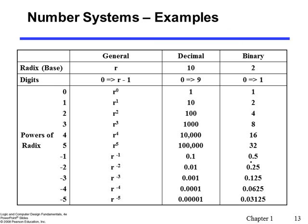In the decimal number system the radix is ten, so we have ten different digits: zero through nine. In the binary number system we have two digits: zero and one — those are the two digits in binary.